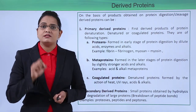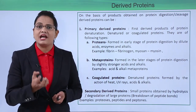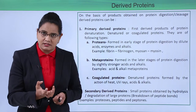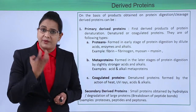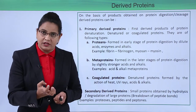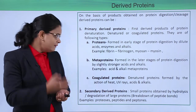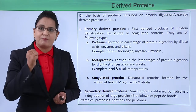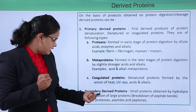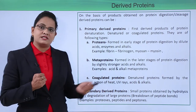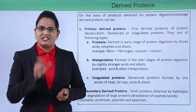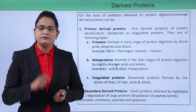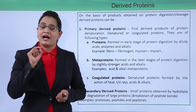Secondary derived proteins are parts of proteins obtained by hydrolysis — breaking of the protein by breaking of the peptide bonds. Examples include peptones, proteoses, and peptides. The small peptides that are obtained through this process are also derived proteins.